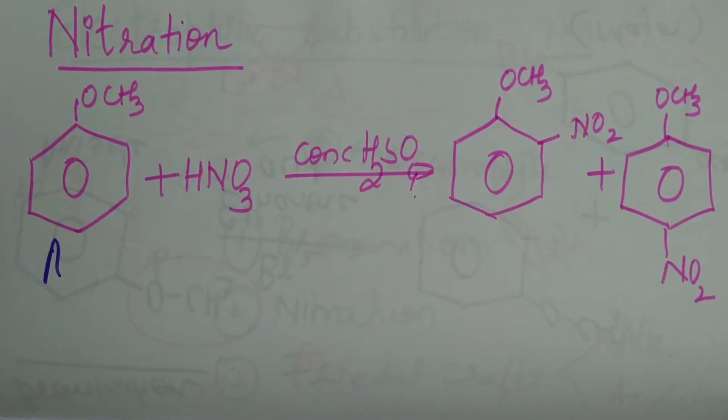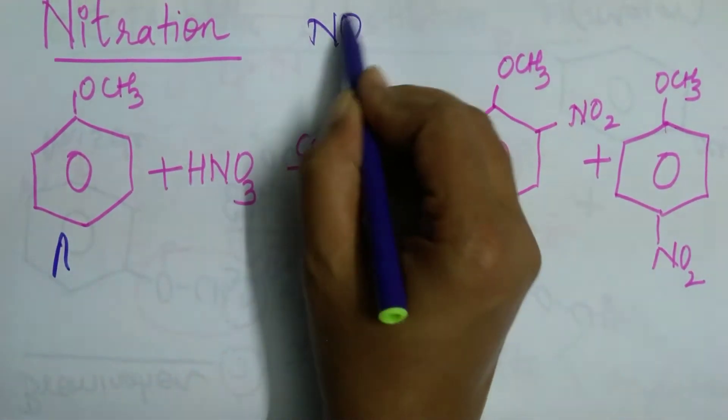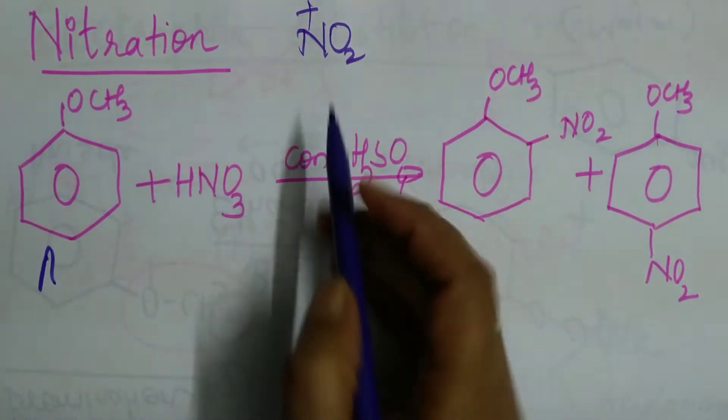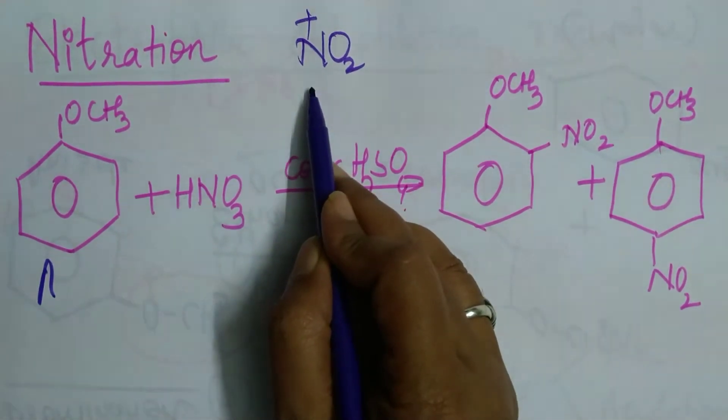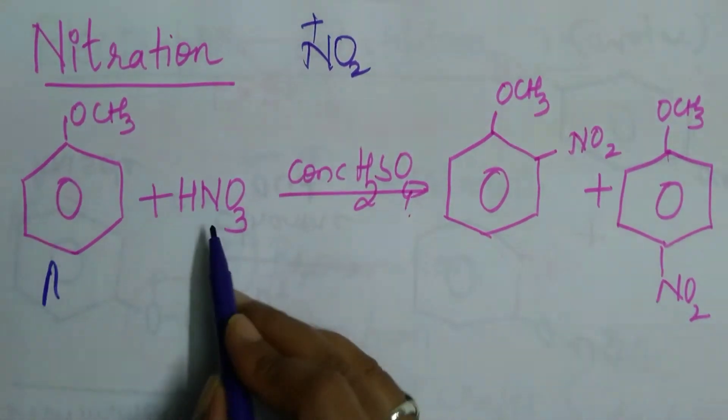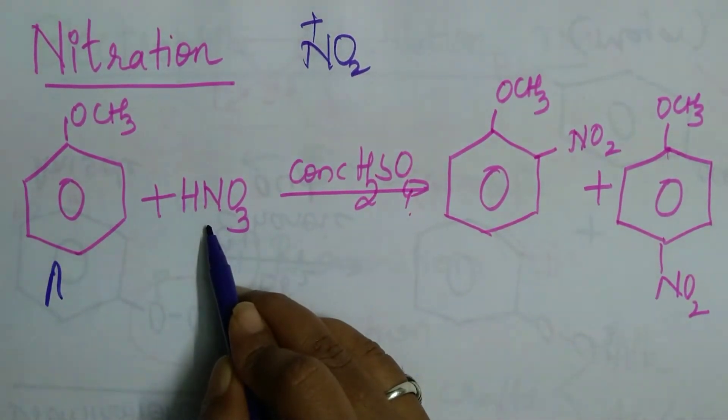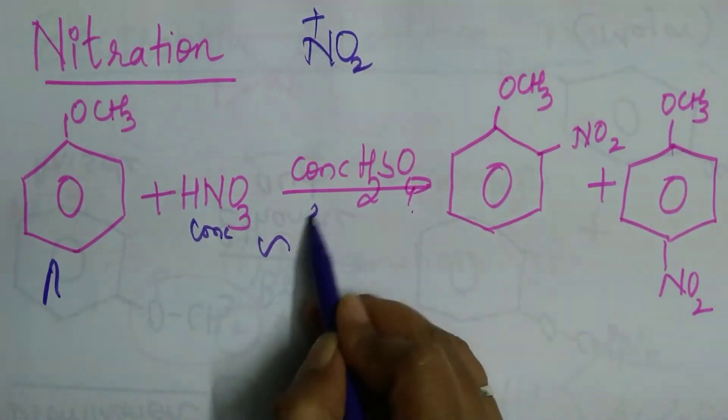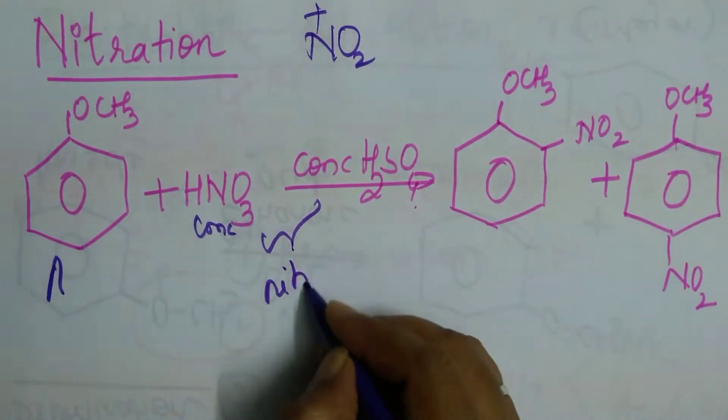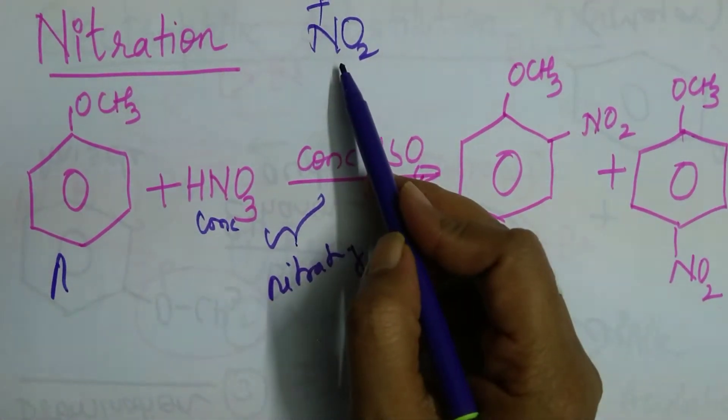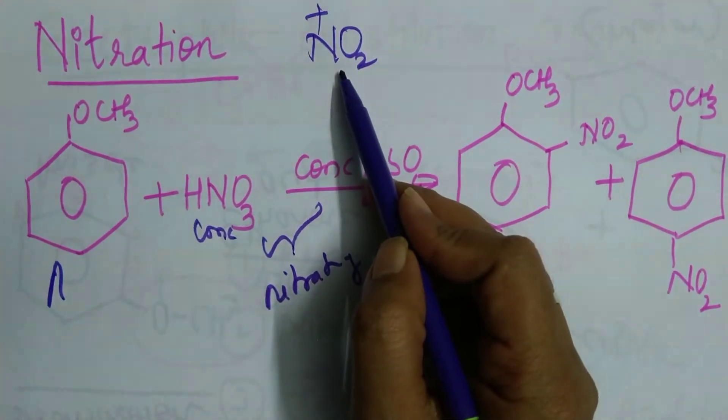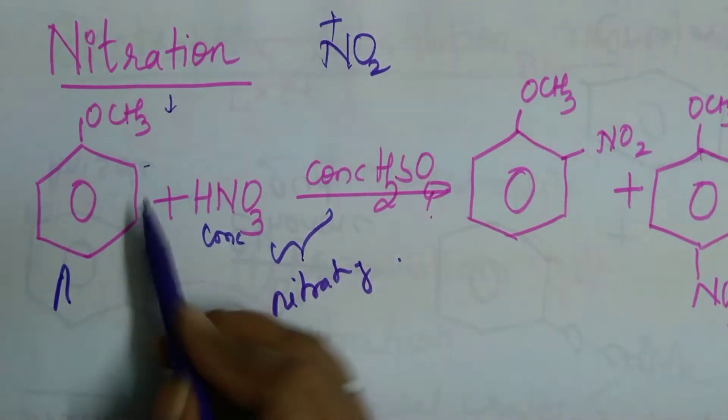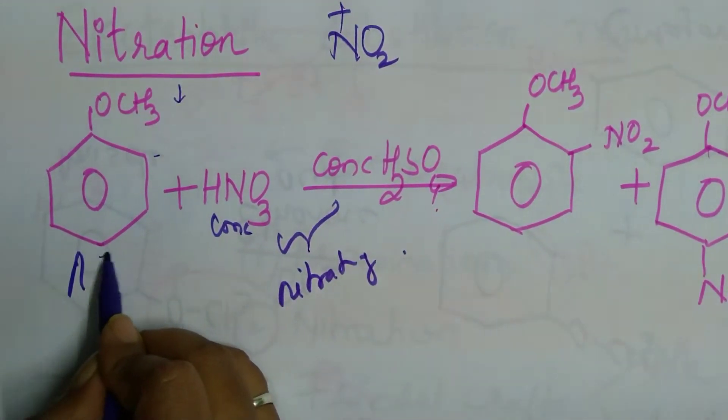Nitration. What is nitration? Introduction of NO2 group into the benzene ring is called nitration. So how do I generate nitronium ion? This is called nitronium ion. By reacting mixture of concentrated nitric acid with sulfuric acid. This mixture is called nitrating mixture.